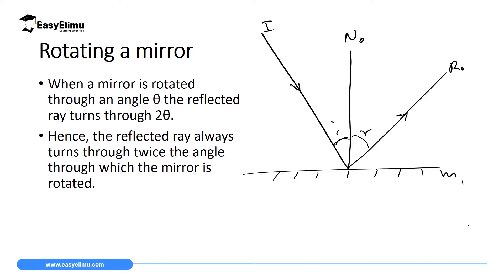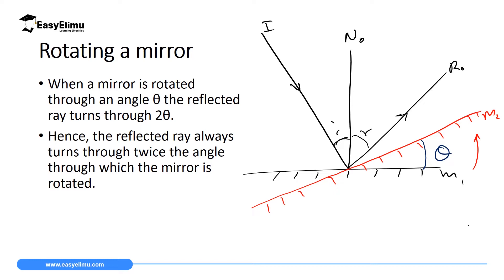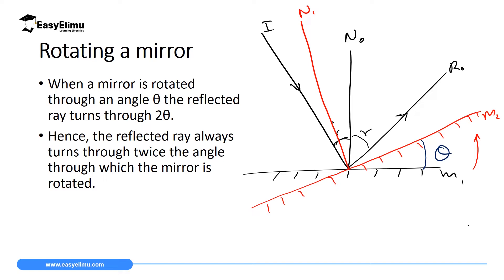Now if we rotate this mirror — keeping the source constant — in an anticlockwise direction, we tilt one side upward, and we will have our new position of the mirror as M2. If the angle rotated is theta, then N-naught can no longer serve as a normal because the angle would not be 90 degrees, so we need a new normal that forms 90 degrees to this new mirror. Let's call it N1.